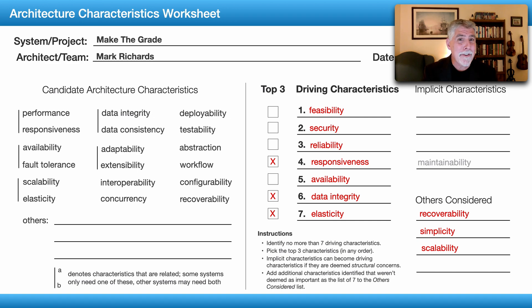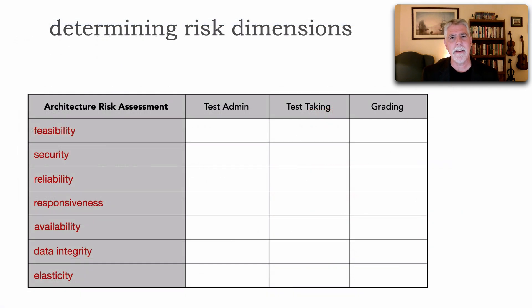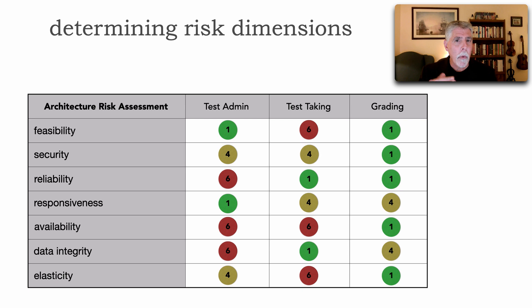However, back to our architecture risk assessment, these make great risk criteria because now I can say based on test taking, are we at risk for our feasibility of being able to even do this in cost and time budgets, security, reliability of our test taking versus our grading. And from here, now at this point, we can start to identify that risk by these quadrants based on criteria and our context—what is our overall risk for that particular area.